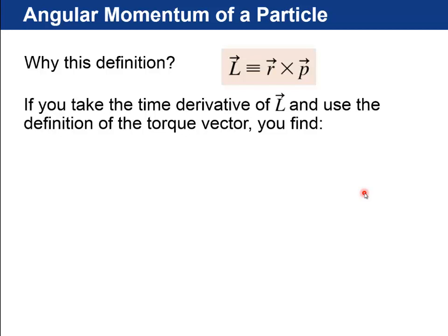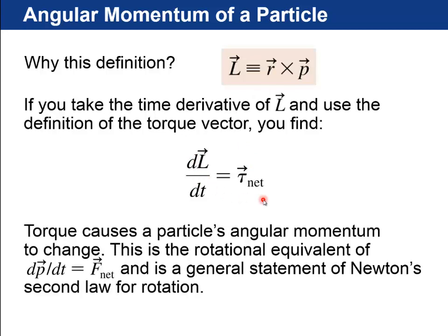So why do we use r cross p? Well, if you take the time derivative of this l vector, angular momentum, and you use the definition of the torque vector, which is r cross f, you get that the time derivative of l is equal to the net torque. And that's exactly analogous to Newton's second law. Remember, the time derivative of the momentum was equal to the net force. Well, now the time derivative of the angular momentum is equal to the net torque.